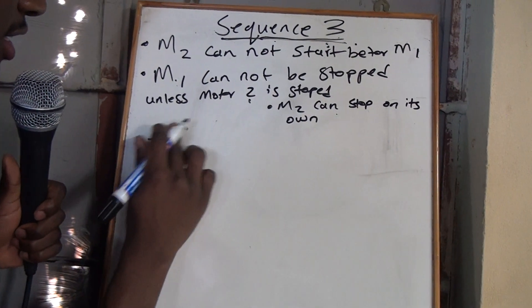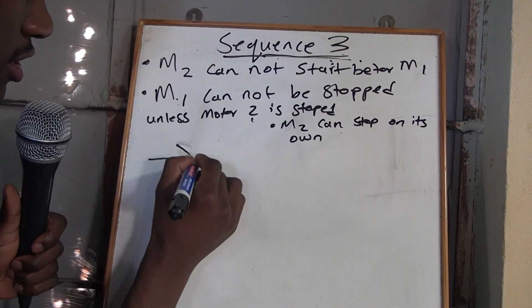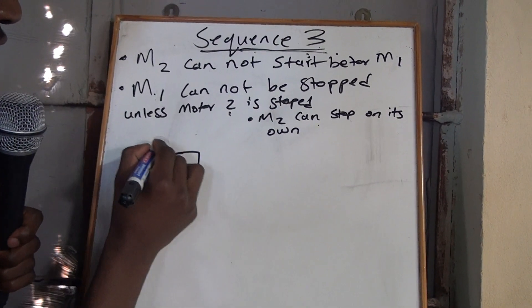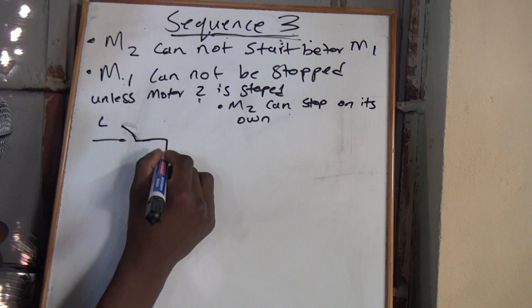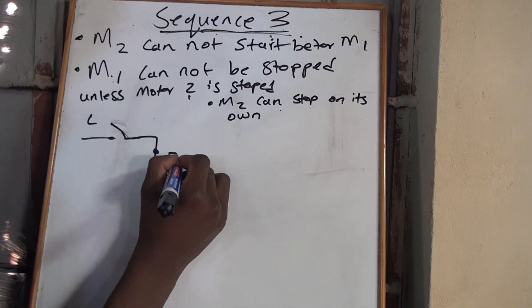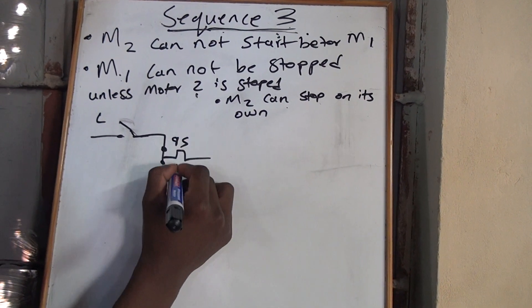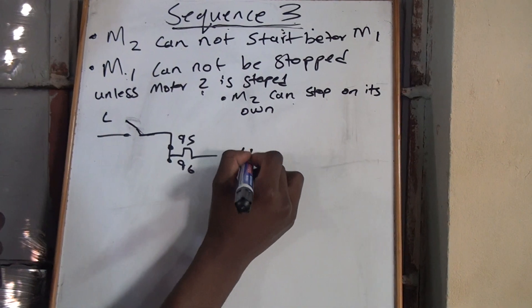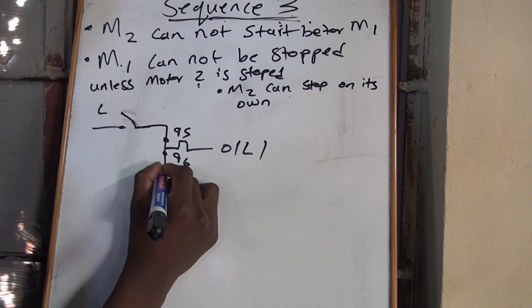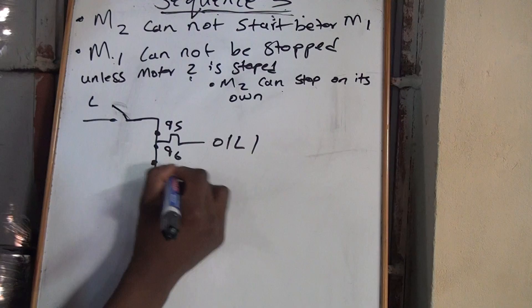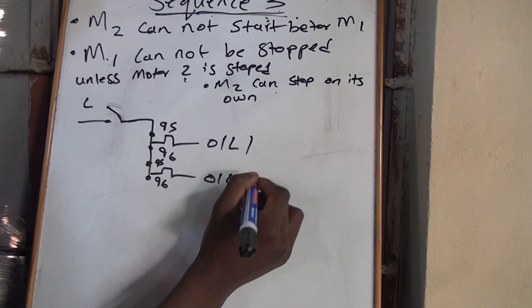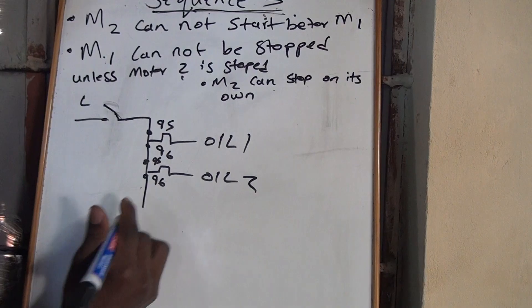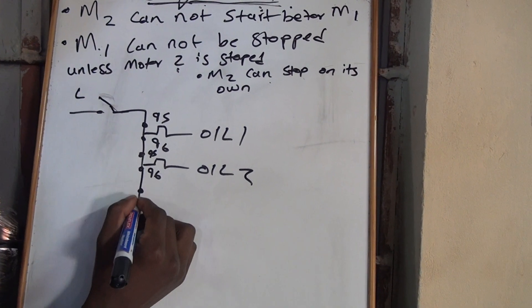And remember what I said. You always draw your DOL first. Draw your direct. You have your line here. And then you have your 95, you have your 96, overload 1. You have your 95, you have your 96, overload 2.